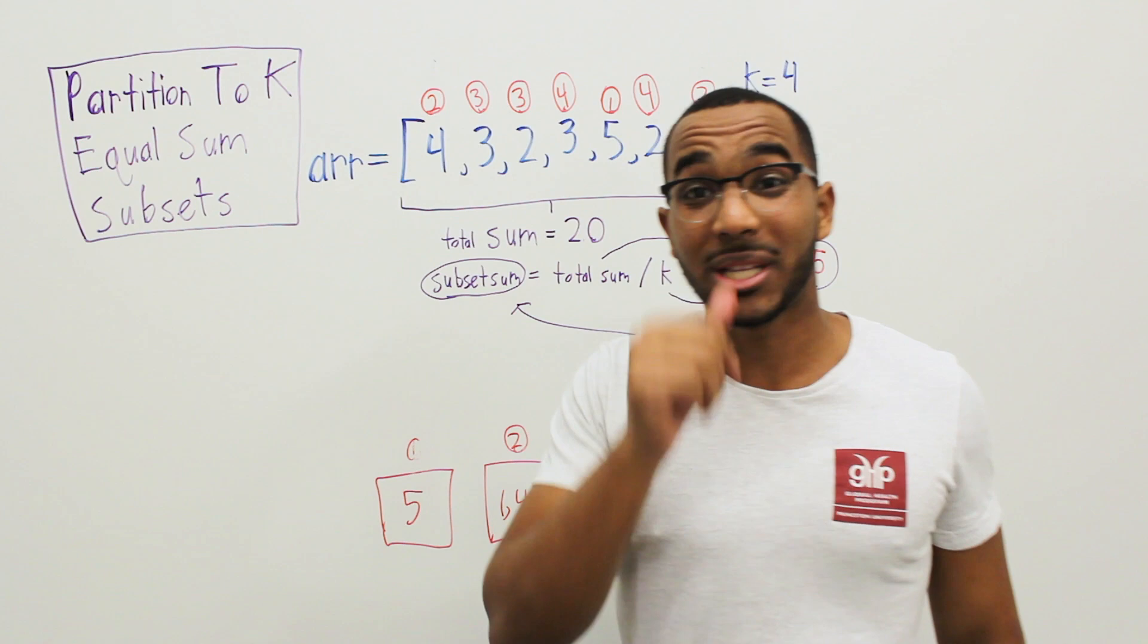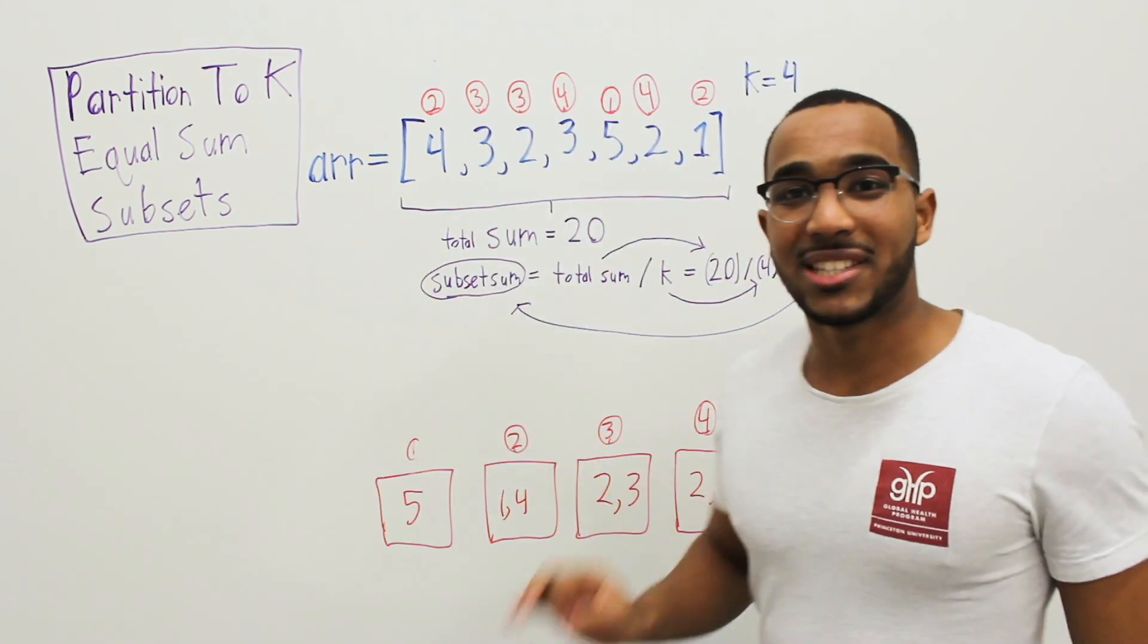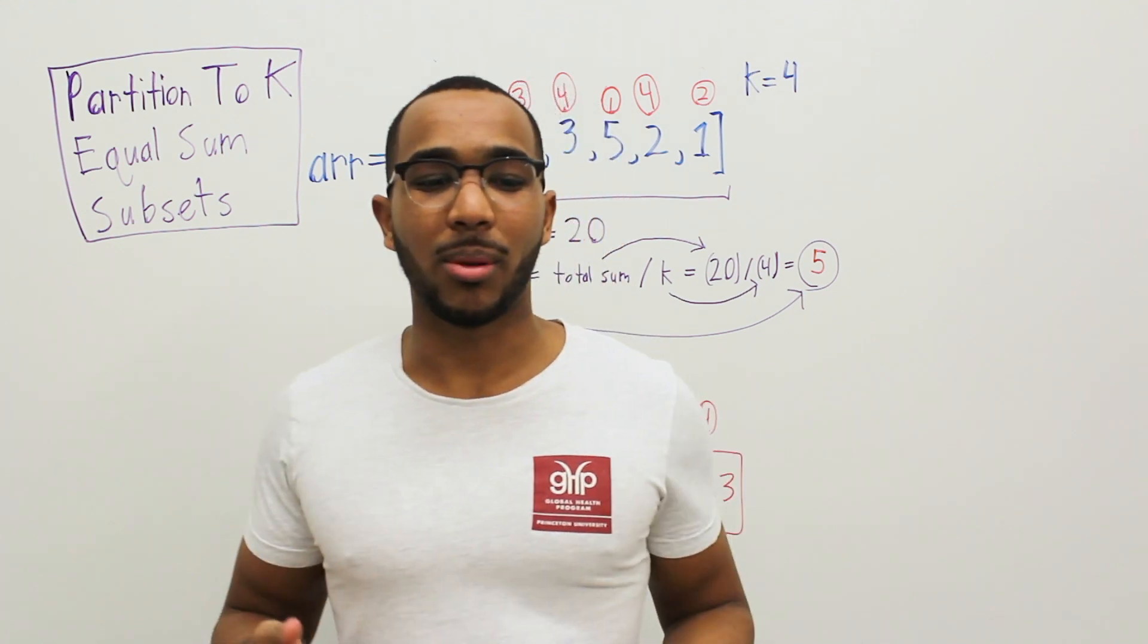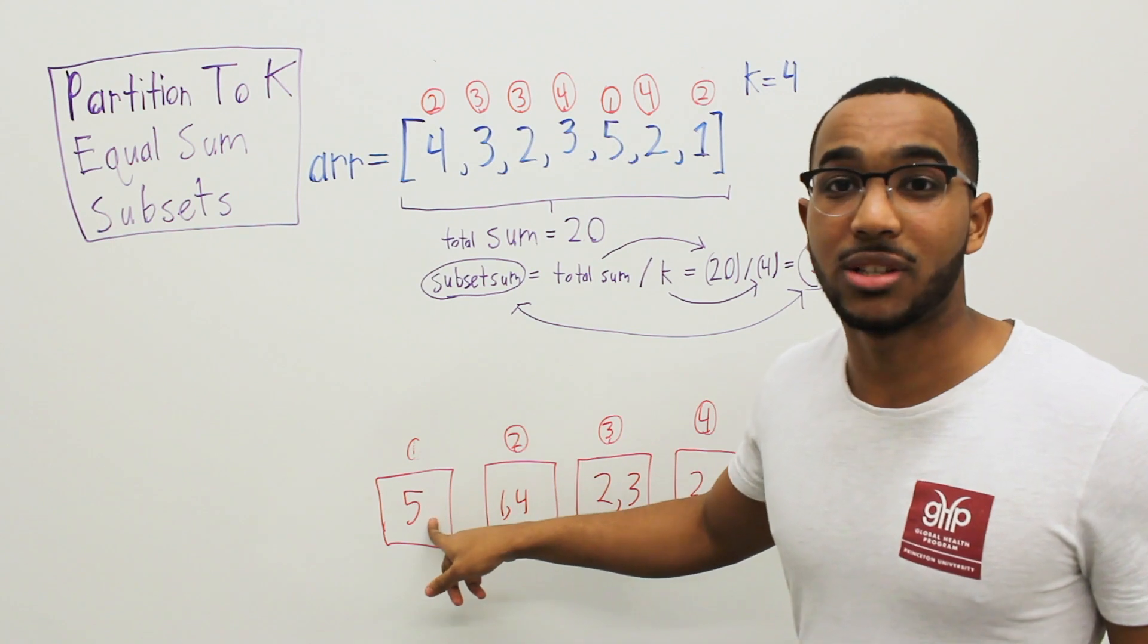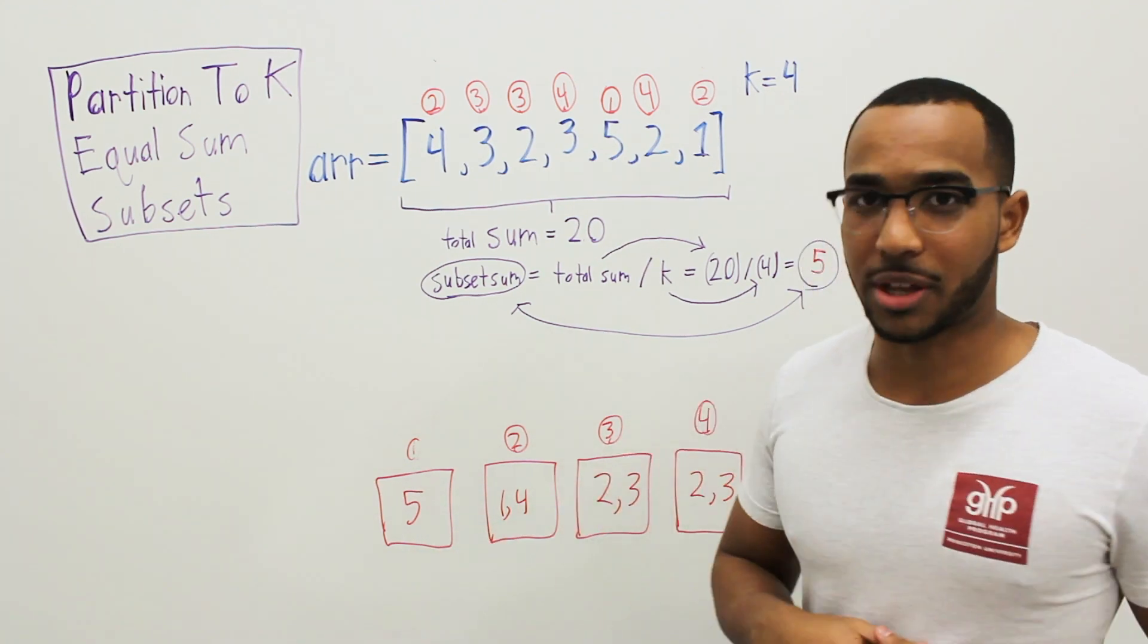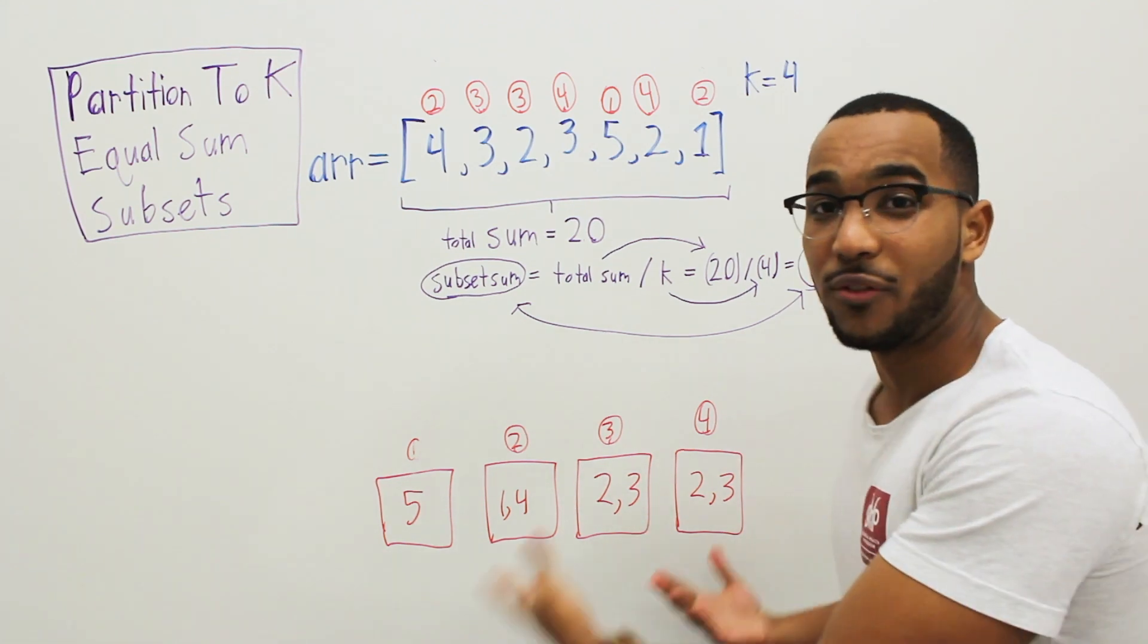We only can use every element in the array once, and we must use all elements in the array. As you can tell, this looks like a problem where we try placements. We backtrack if a certain placement doesn't work. I might throw the 1 into bucket 1. I might remove it from bucket 1. I might throw 4 into bucket 1. I might remove it.